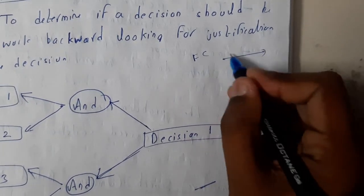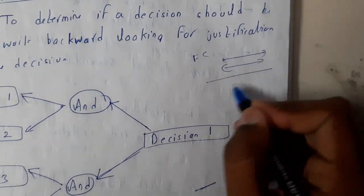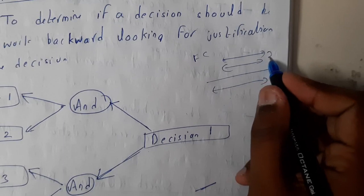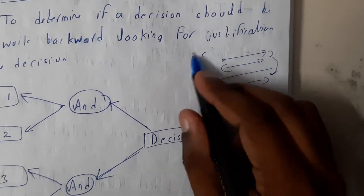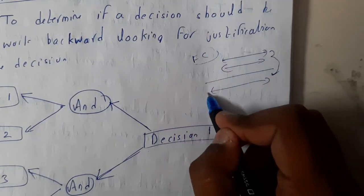First, let us go through forward chaining. There will be two facts or two or more facts given and the result. So from the facts you'll be going to the result, so this is nothing but forward chaining.